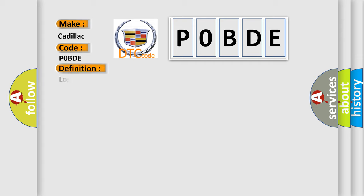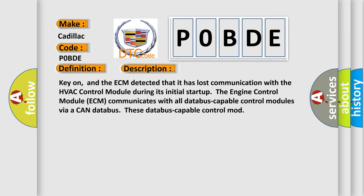The basic definition is lost communication with HVAC control module. And now this is a short description of this DTC code. Key-on, and the ECM detected that it has lost communication with the HVAC control module during its initial startup. The engine control module ECM communicates with all CAN bus-capable control modules via a CAN database.